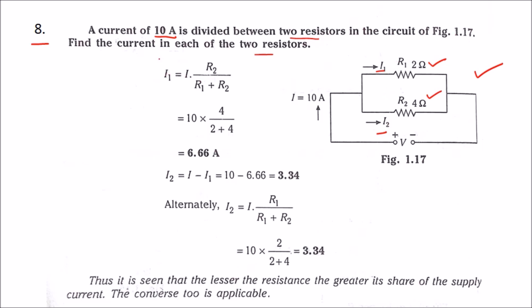First we will calculate i1. In the previous problem I showed you how this formula has been derived. So using this formula we can calculate i1. We know the supply current which is 10 amps and resistance values.